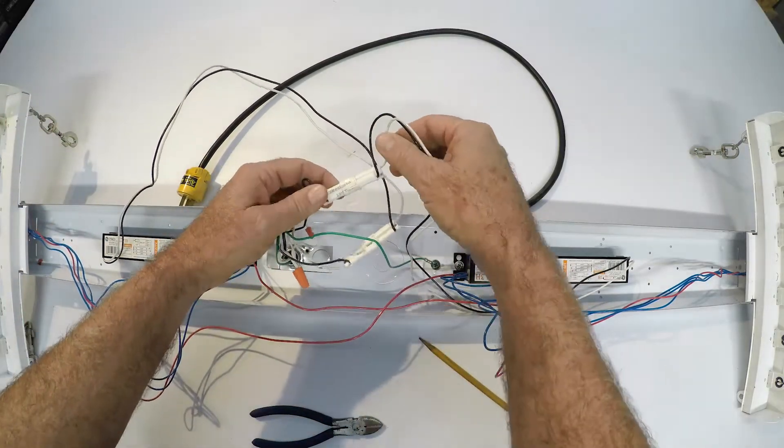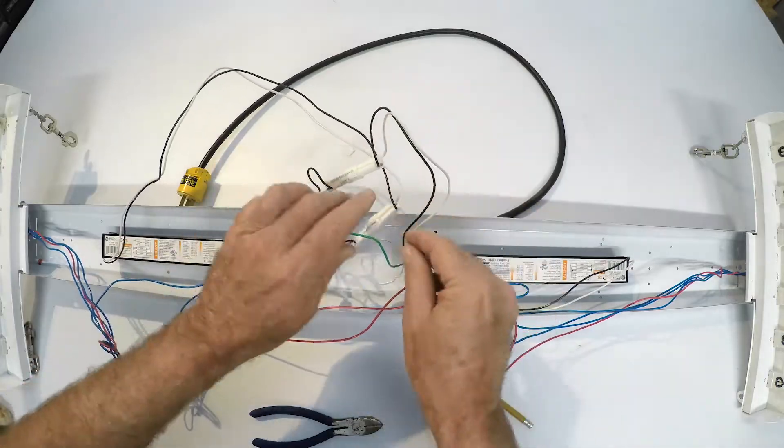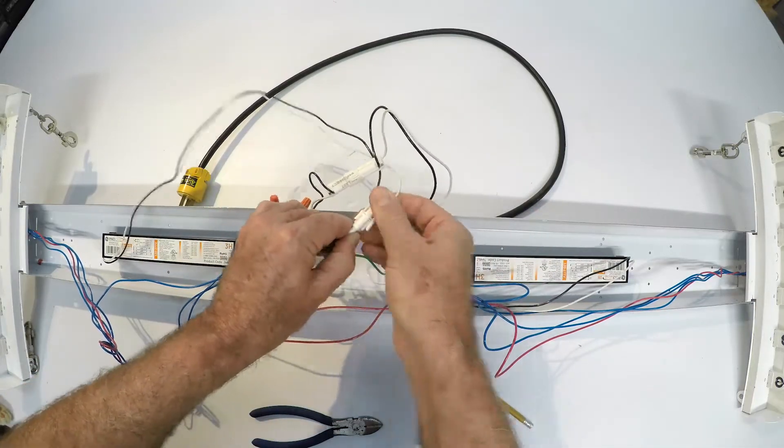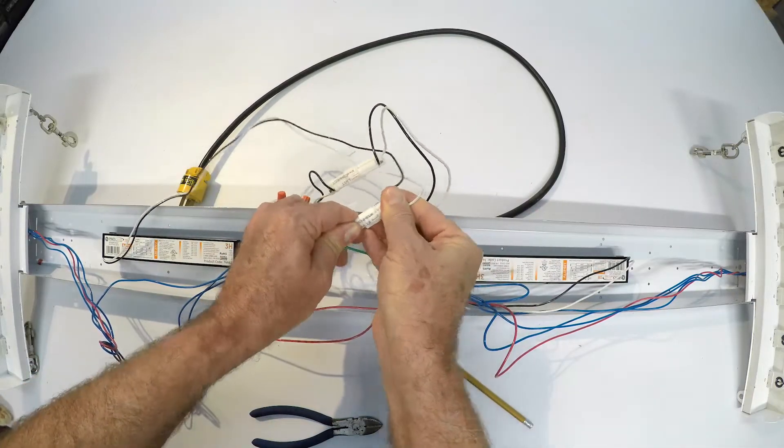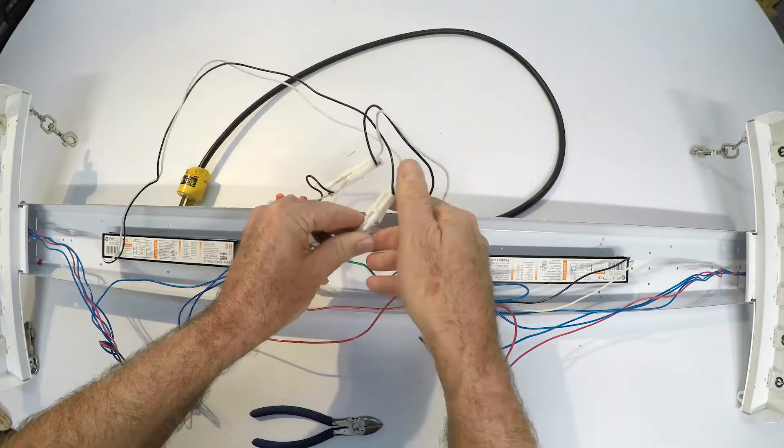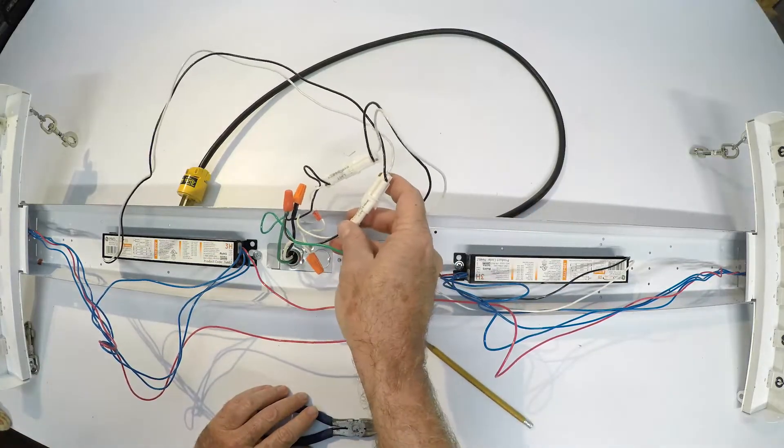These little guys here look like something really fancy and dangerous and expensive, but really all they are is little quick connects and it allows the people to disconnect the ballast while they're working on it and the power is hot.